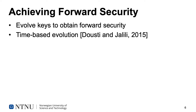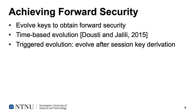Within each time period, which we call an epoch, any past session remains vulnerable, but any session from previous epochs are protected. This is a weaker form of forward security, but may in some cases be acceptable. This method does require synchronized clocks on the devices in use. Since we are considering very constrained devices, this is not an assumption we are willing to make. Therefore, we use triggered evolution. Triggered key evolution essentially means that we evolve the key every time some specific event occurs. In our case, any time a session key has been derived by a party, we evolve the key. So immediately after session key derivation, the key is evolved and we are no longer able to recompute the session key.